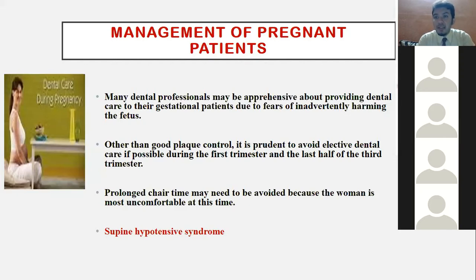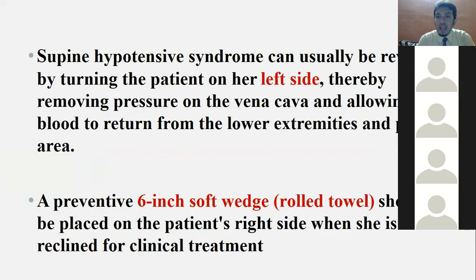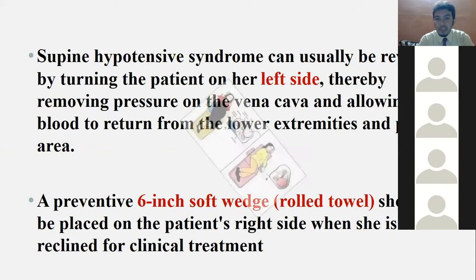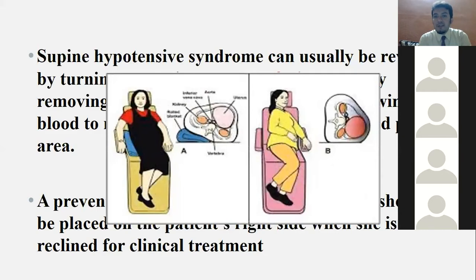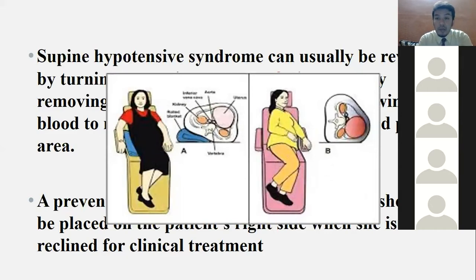When a pregnant woman lies completely supine on the dental chair, it compresses the vena cava and leads to supine hypotensive syndrome. The precaution is to make the patient lie on her left side, slightly elevated with a six-inch soft wedge, so that the vena cava is not compressed, preventing hypotension.